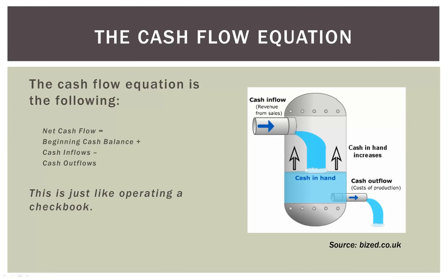So what is the basic cash flow equation? At some period in time, maybe January 1st, a business has a cash position — a certain amount of cash assets on its books. Over the course of the year, hopefully they have cash coming in and less cash going out. You can see the graphic over here on the right: they have a cash inflow — in this example it's revenue from sales — and if the outflow at the bottom is less than the inflow at the top, then the cash in hand goes up.